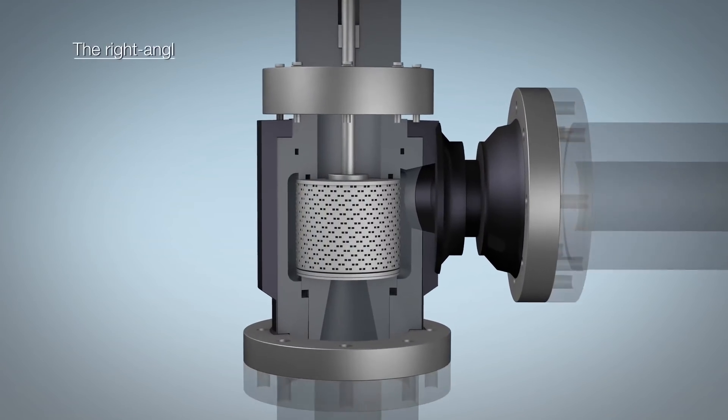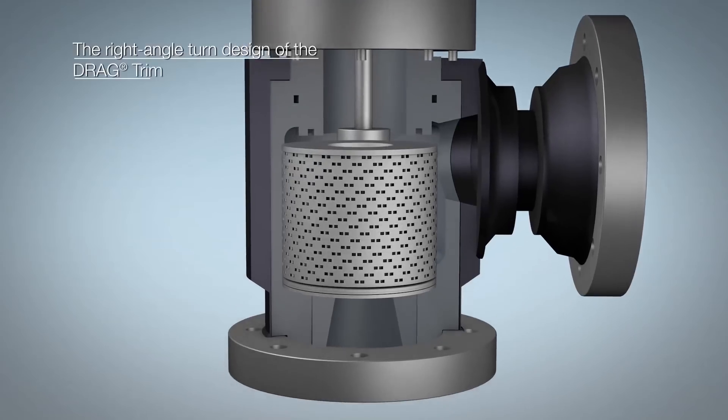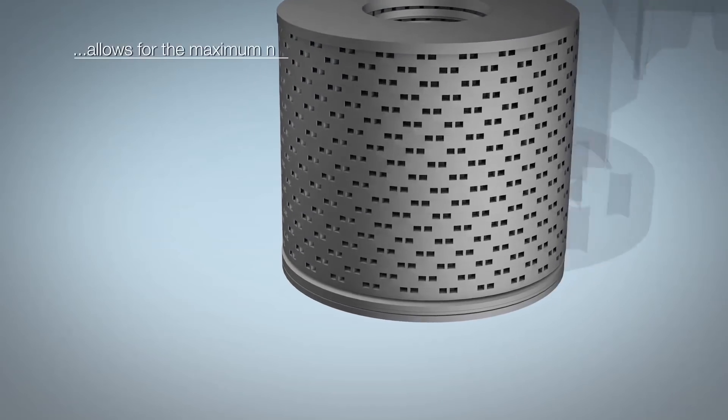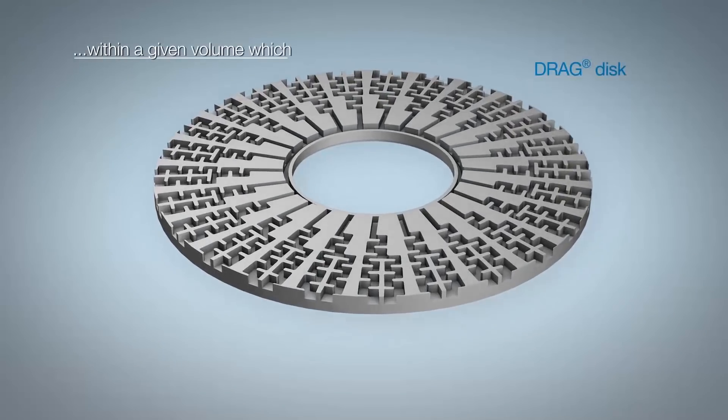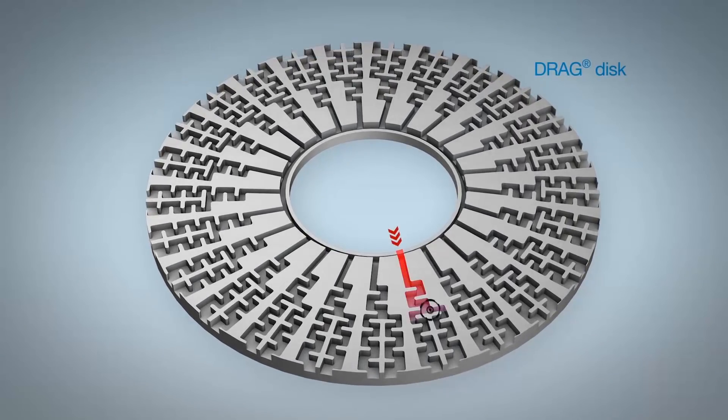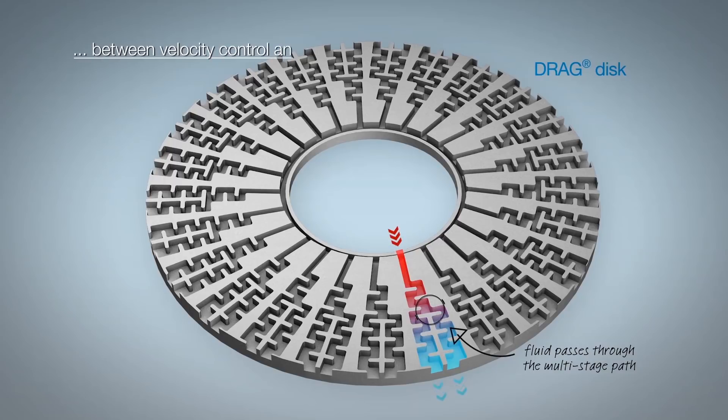The right-angled turn design of the drag trim allows for the maximum number of pressure reducing stages within a given volume, which results in an optimized balance between velocity control and product size.